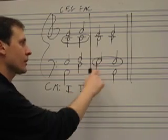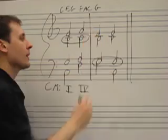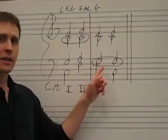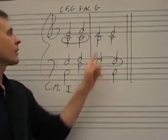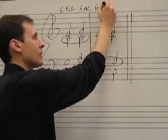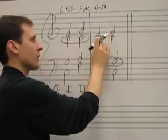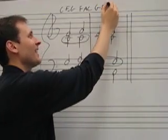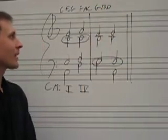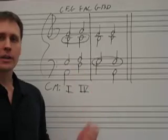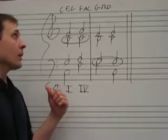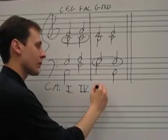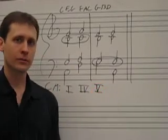Continuing on, we've got G. In this case, the bass and the tenor share the same note, so both the bass and tenor are G. Continuing up, the alto is B, and the soprano is D. So clearly, this is a G major chord. In the key of G, a G major chord is the dominant chord, so we put a Roman numeral V right there.